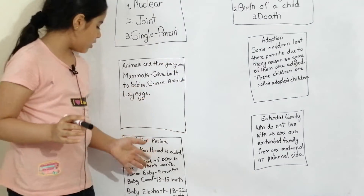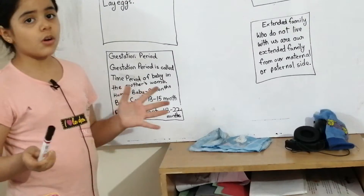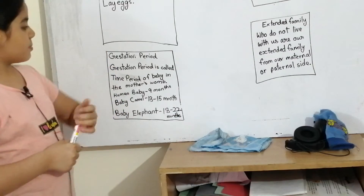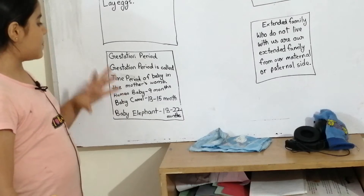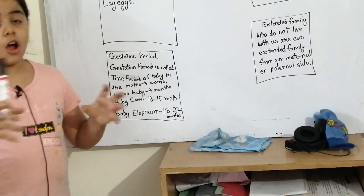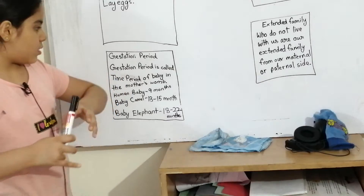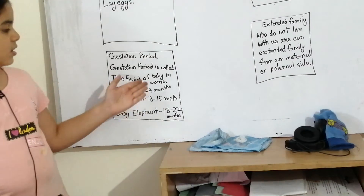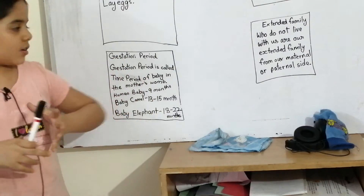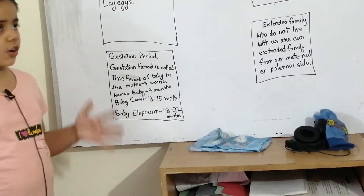Now we are going to do the gestation period. The gestation period is the time a baby spends in the mother's womb. I want to tell you that the womb is a small bag in the mother's stomach in which the baby stays. It is called the womb. Now I will tell you the gestation period of a human being.